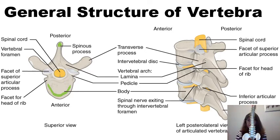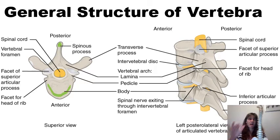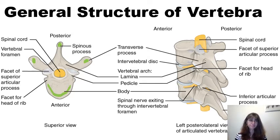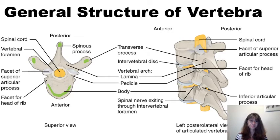Coming out from either side of the vertebrae are transverse processes, located from the lumbar spine up to the cervical spine. The cervical vertebrae have special holes in their transverse processes known as transverse foramina, which are only found in the cervical spine. The transverse foramina allow for the passage of the vertebral artery and vein in the first six cervical vertebrae. However, the seventh cervical vertebra has only the vertebral vein in its transverse foramina. Another distinguishing feature of cervical vertebrae is the spinous process tends to be bifid, or forked.